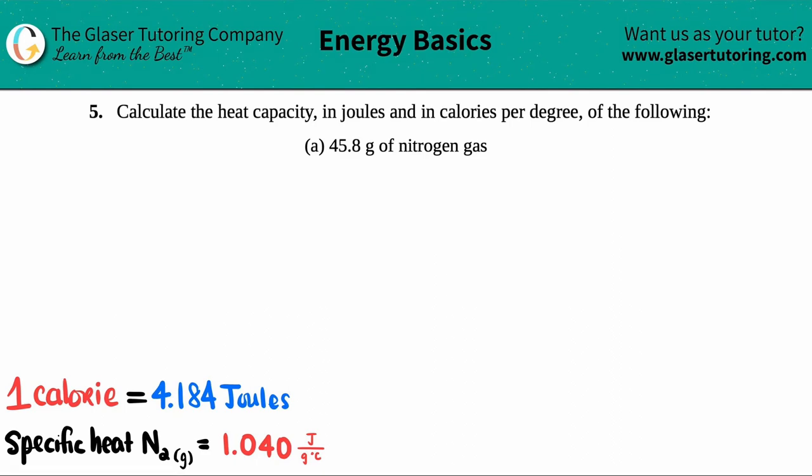Number five, calculate the heat capacity in joules and in calories per degree of the following. And then we have letter A. So in this case, we have to find the heat capacity of 45.8 grams of nitrogen gas. And nitrogen gas is N2, right? Nitrogen is a diatomic. It's one of our diatomics and it's in gas form. So we have to find the heat capacity for 45.8 grams of nitrogen gas.